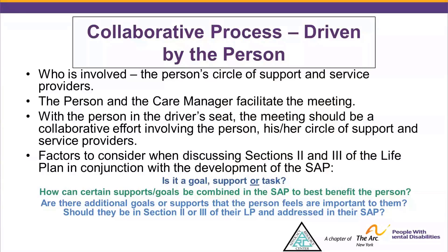Another thing to consider: are there additional goals or supports that the person feels are important but not yet in the Life Plan? These should be added and addressed in the Staff Action Plan. It may also be challenging for a person to achieve a large number of goals during the same timeframe. It may be worth discussing whether goals would be better addressed by multiple providers, or whether some goals should be on hold until higher-priority goals are met first. The person should make the final decision with the support of their providers and circle of support.